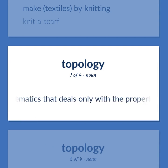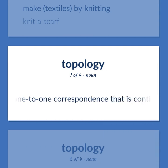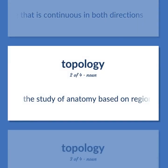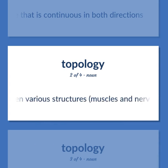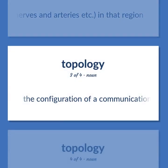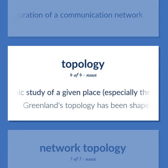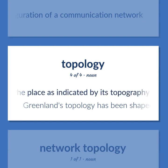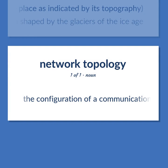TOPOLOGY: The branch of pure mathematics that deals only with the properties of a figure X that hold for every figure into which X can be transformed with a one-to-one correspondence that is continuous in both directions. The study of anatomy based on regions or divisions of the body, emphasizing the relations between various structures — muscles, nerves, and arteries — in that region. The configuration of a communication network. Topographic study of a given place, especially the history of the place as indicated by its topography — Greenland's topology has been shaped by the glaciers of the ice age.